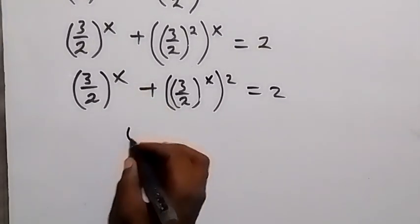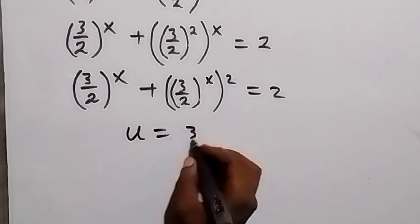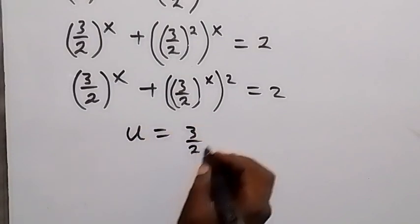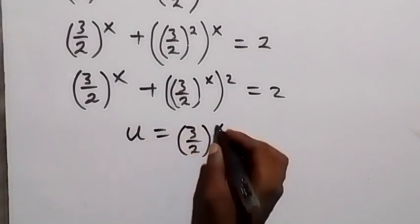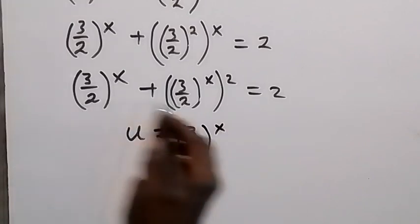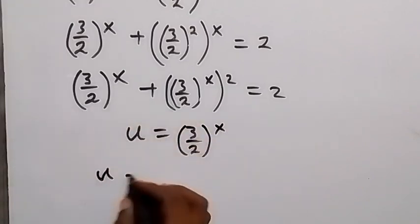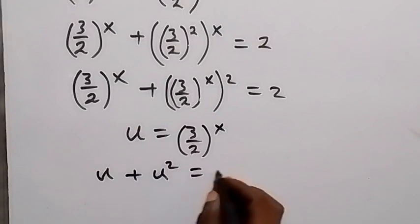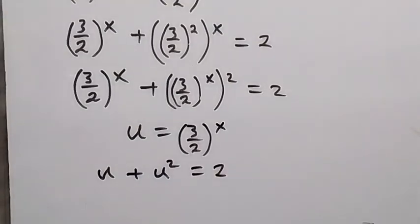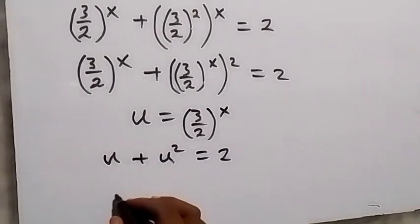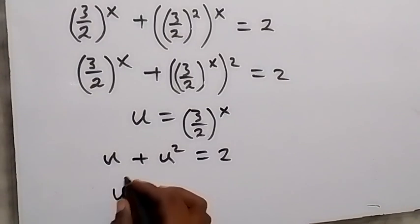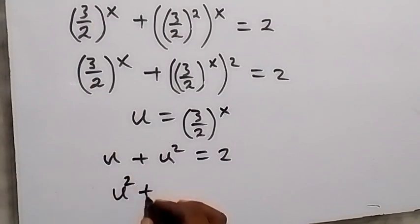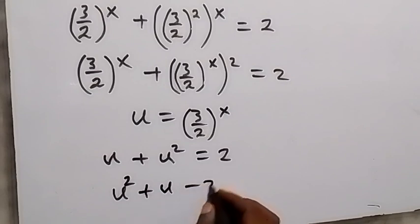We can see what is common here is 3 over 2 raised to power x. So let u equal 3 over 2 raised to power x. Then this equation becomes u plus u squared equals 2. We take 2 to this side to form an equation, so this becomes u squared plus u minus 2 equals 0.